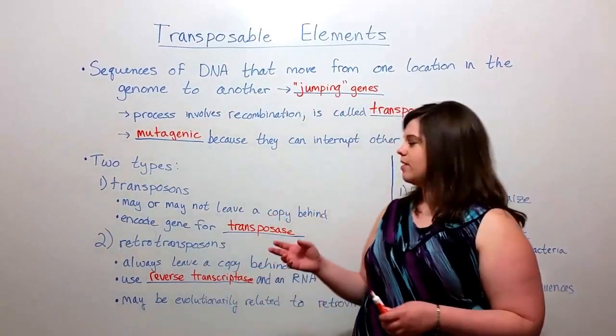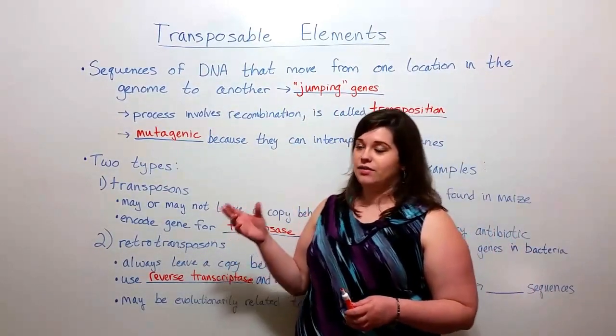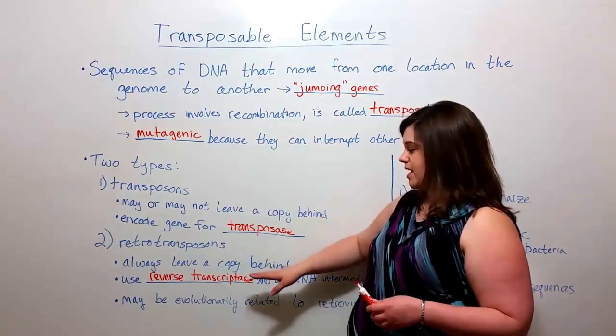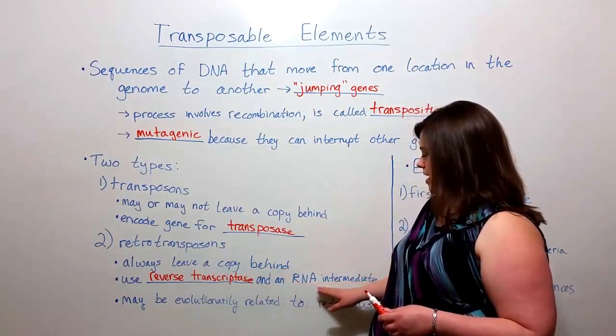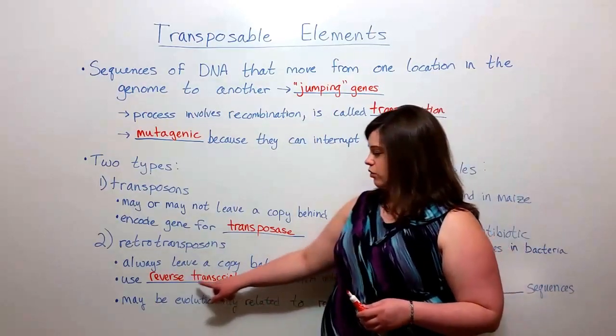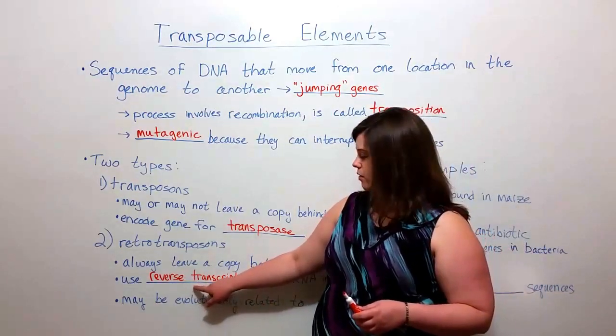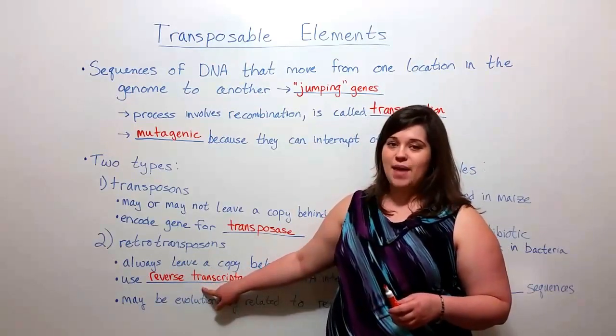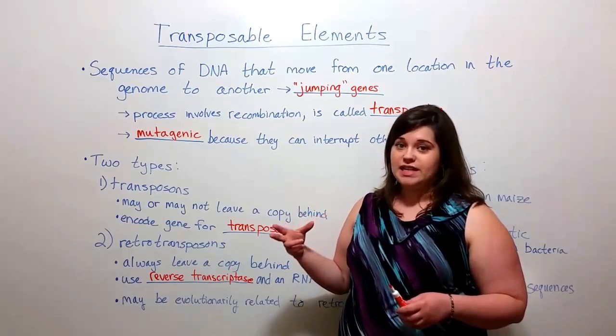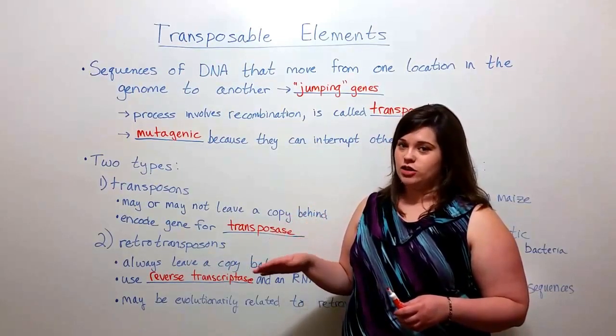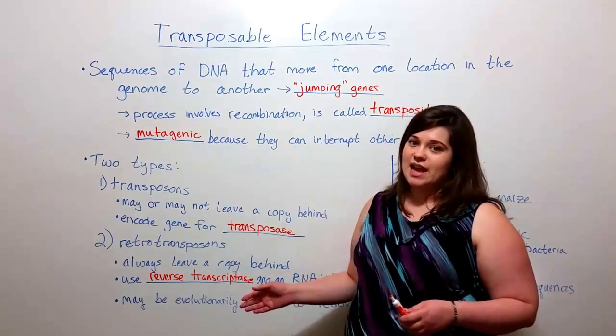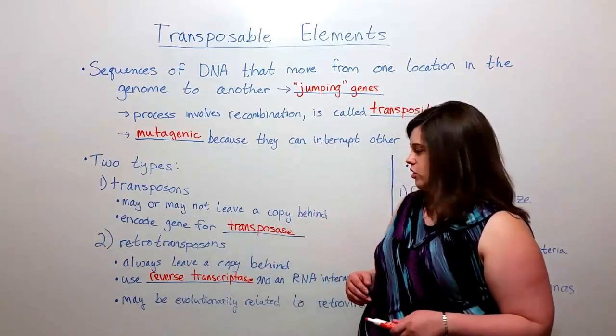This means that you have the DNA, the DNA that is the transposable element. It gets copied into an RNA intermediate. The RNA intermediate is then reverse transcribed by reverse transcriptase back into DNA. And that second portion of DNA is what gets integrated into the new location in the genome, while the original DNA is left behind in the original position.